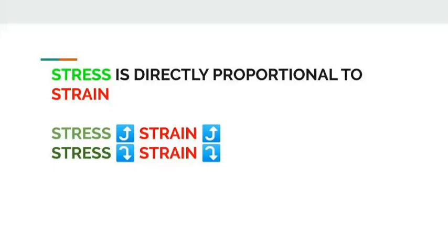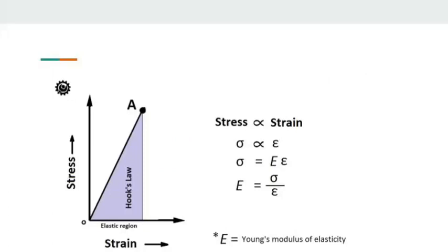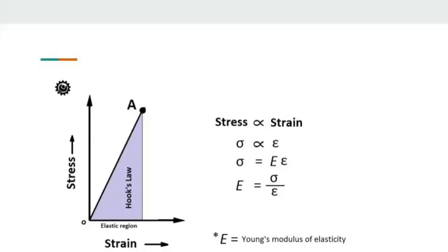When stress increases, strain also increases. When stress decreases, strain also decreases. That's why stress is directly proportional to strain within the elastic limit — this is called Hooke's Law.